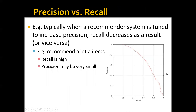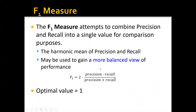Typically, increasing precision in a recommender system will decrease recall, and vice versa. For example, if we recommend a large number of items, recall will be very high but precision may be very low. In an extreme case, recommending all items gives 100% recall but extremely low precision. The F1 measure tries to combine precision and recall into a single value by computing their harmonic mean, providing a more balanced view of performance, with an optimal value of 1.